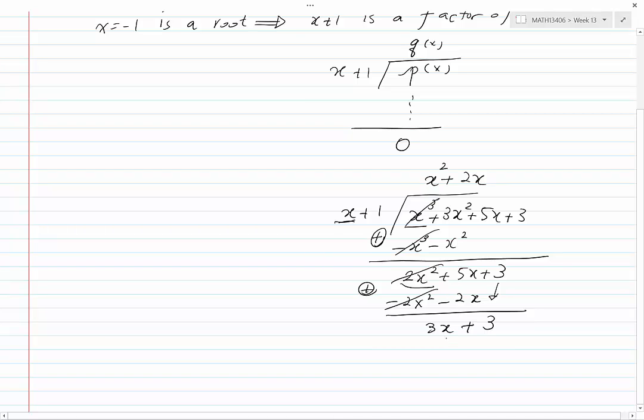The leading term divided by the leading term will give us 3. 3 times x is 3x, we write minus 3x and 3 times 1 is 3, we write minus 3. And we add these two expressions and we will get 0.